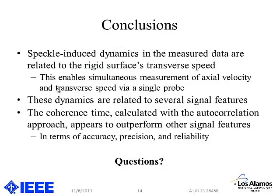To wrap things up: speckle-induced dynamics in PDV data — which happen whether you want them to or not — are related to the surface's transverse speed. We've shown and published that a single probe can simultaneously measure the Doppler shift along the beam axis and the speckle dynamics caused by motion perpendicular to the beam. We related those dynamics to several signal features: the variance approach was shown to be subjective in its performance; there's promise for frequency content; and the autocorrelation approach has the best-behaved statistics, especially as you use longer and longer time records. That's all I've got — I'd be happy to take any questions.